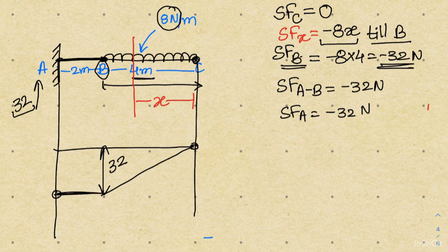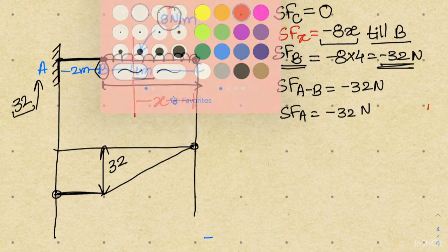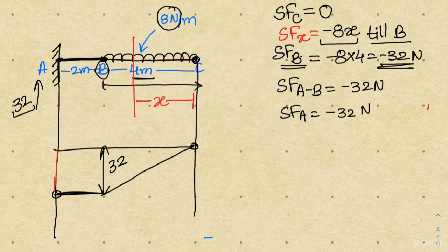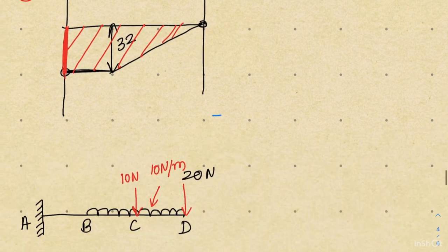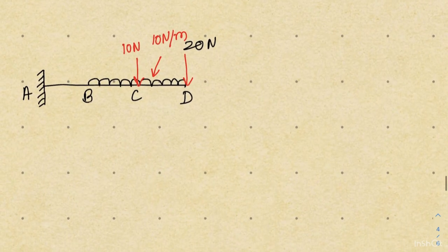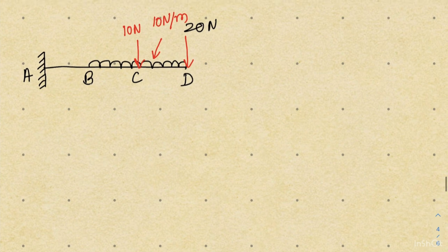From point B to A there is no variation in shear force, so the line remains straight. When reaching point A, there will be a reaction — in this case of magnitude 32 newton — which causes the shear force diagram to close. This reaction is the verification of our answer. This completes the shear force distribution for this second problem.